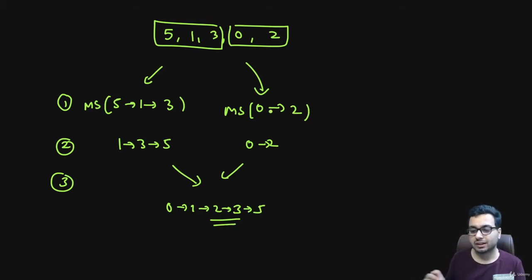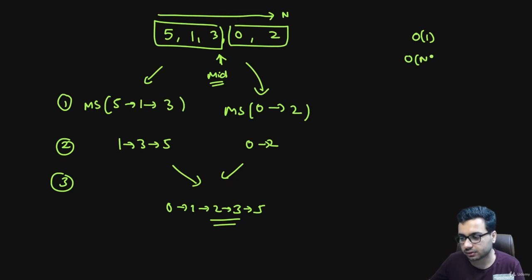One thing you need to do is here you will calculate the midpoint. In case of an array, this calculating midpoint takes O(1) time, but in case of a linked list you have to iterate over the entire linked list to find out the midpoint, so it takes O(n) time. This is one thing we will see.